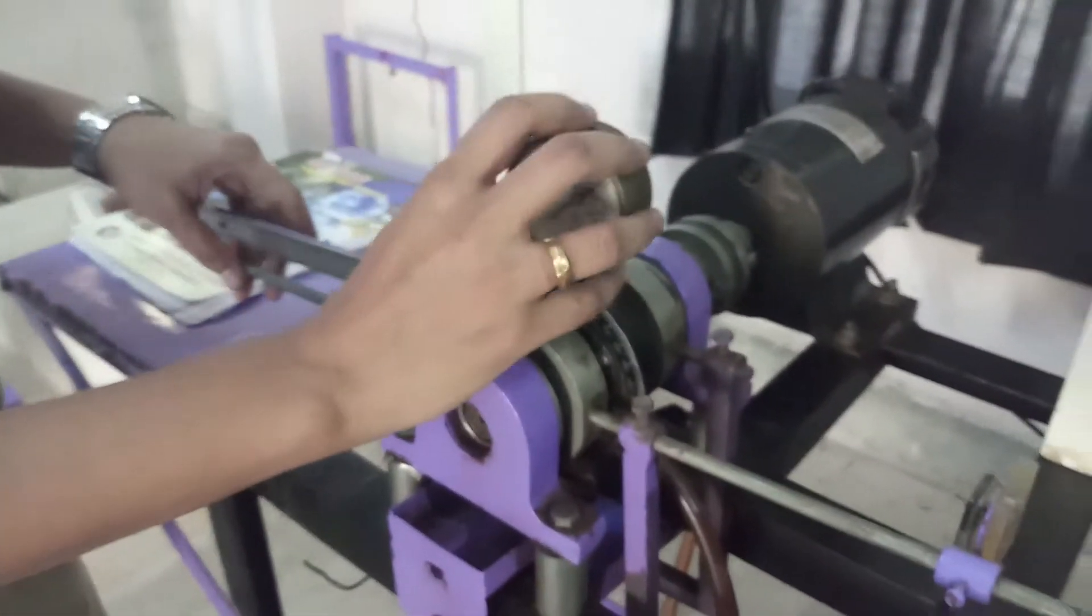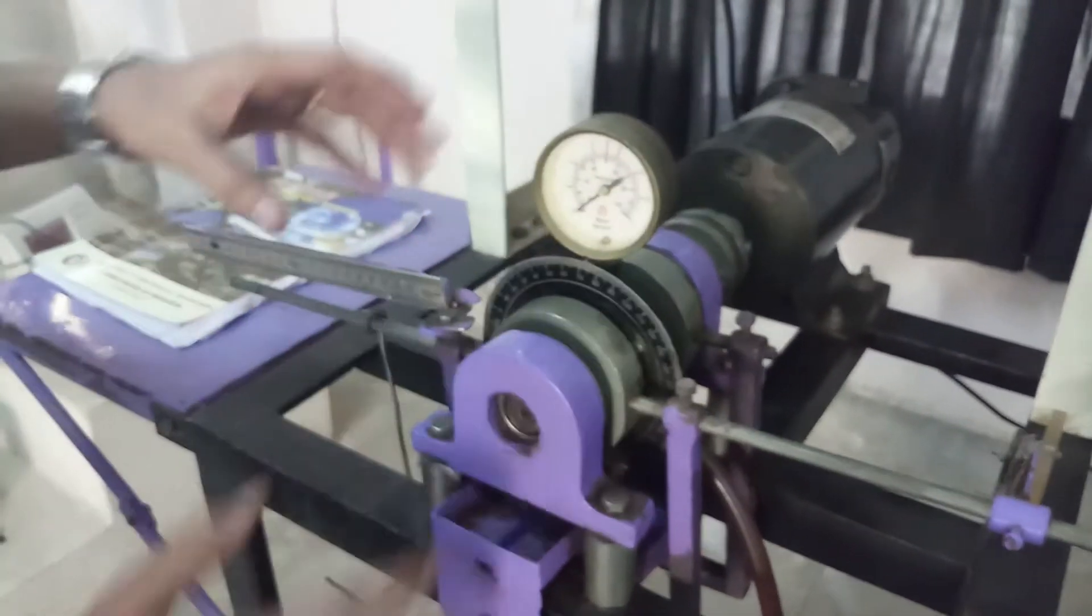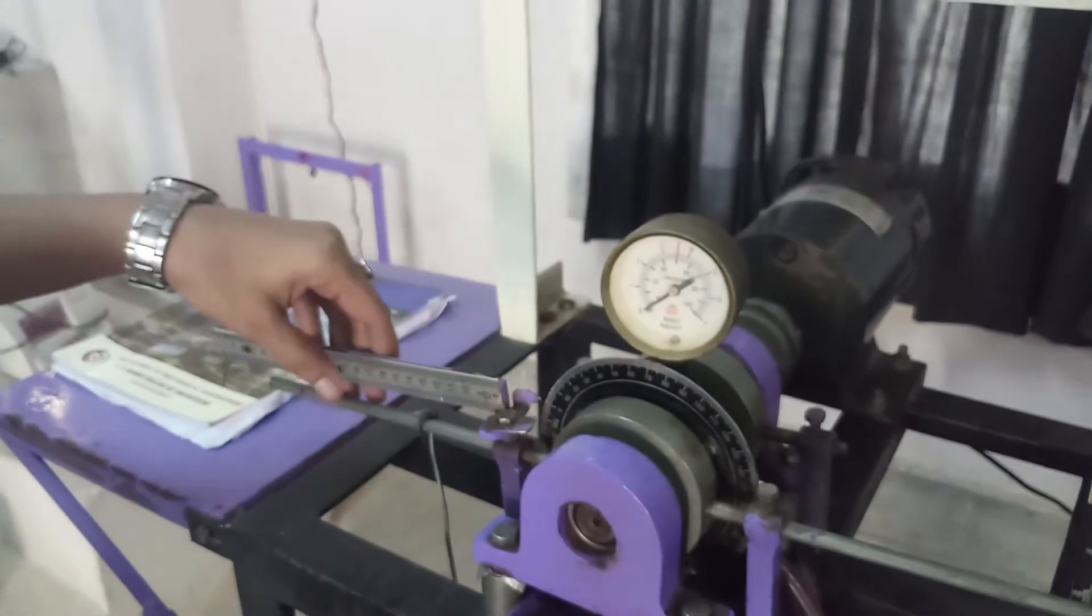This is the pressure gauge which is used to measure the pressure at different angles in the journal bearing.